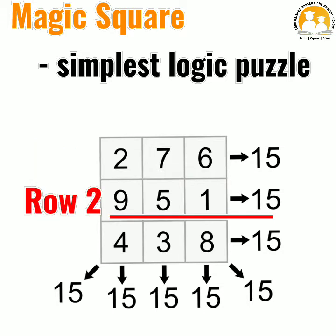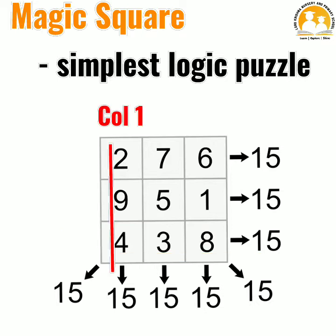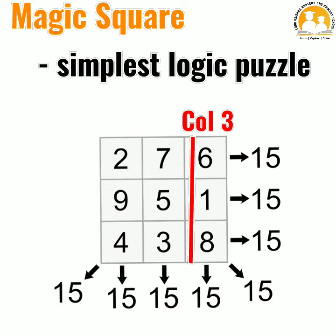Third row adds to 15. Column 1 adds to 15. Column 2 adds to 15. Column 3 adds to 15.